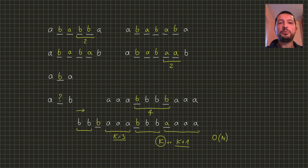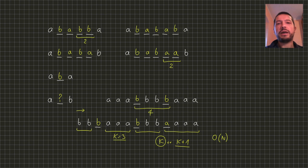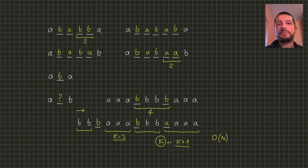So finally we are ready to present the whole algorithm. First, we iterate over the string to extract from it the sequences of challenging gaps. Then we analyze these sequences independently. In each sequence we calculate the length K of the longest fragment and then greedily try to construct a solution with the answer of K. If it's not possible, then the answer for this sequence is K plus 1. As the final answer of the algorithm, we return the maximum length of the fragment in the string and the maximal of the answers for the challenging sequences. The time complexity of this algorithm is linear in the length of the string.